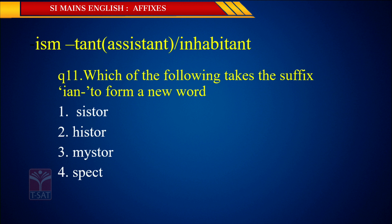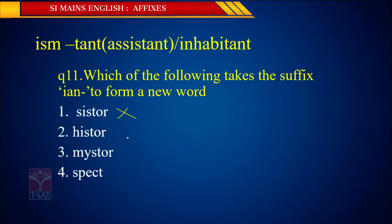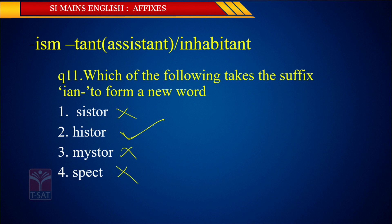More suffix examples: '-ism' as in pessimism, optimism; '-tant' as in assistant, protestant, inhabitant. Question: which of the following takes the suffix '-ian' to form a new word? Options include sister, history. Sister — no. Historian — yes. A historian is a person who makes or records history. So the right answer is historian.